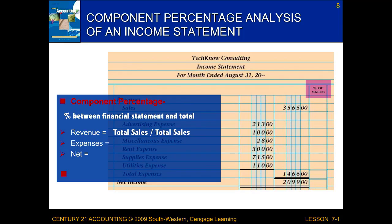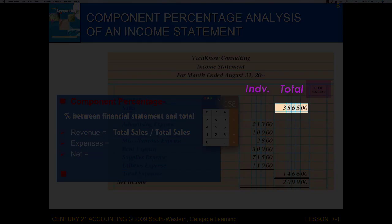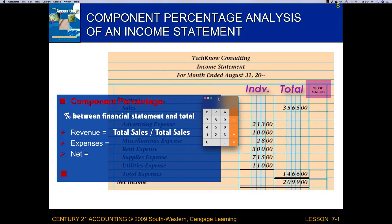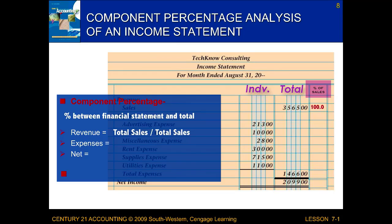To find the percent of sales component percentage for a revenue account, I'm taking sales divided by sales. So I take my total sales — which in the totals column is 3,565 — and divide it by the total sales, 3,565. I hit equals and get one. I convert this to a percentage by multiplying by 100, so I write down 100.0, always rounding to the hundredth place.